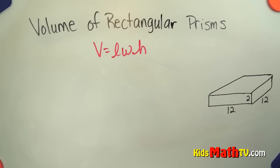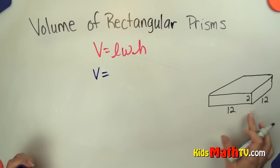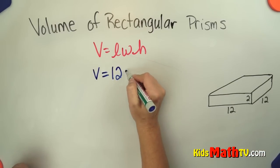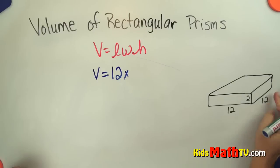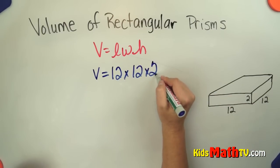We can use the formula volume equals length times width times height. So we simply go volume equals length of 12 times width of 12 times height of 2.